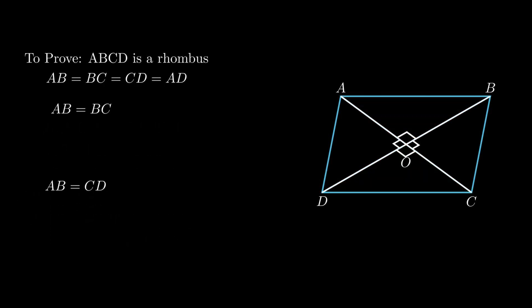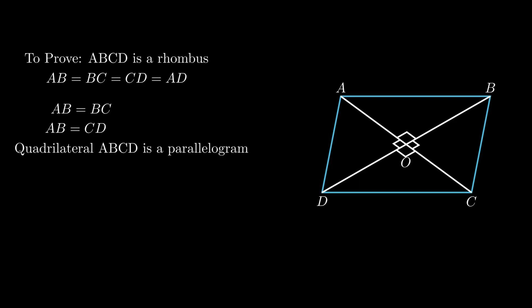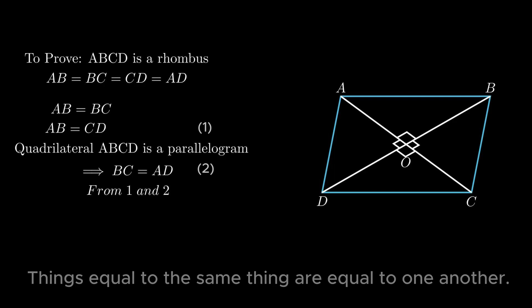Since opposite sides of quadrilateral ABCD are equal, quadrilateral ABCD is a parallelogram. As opposite sides of a parallelogram are equal and parallel, side BC equals side AD. By the axiom that things equal to the same thing are equal to one another.